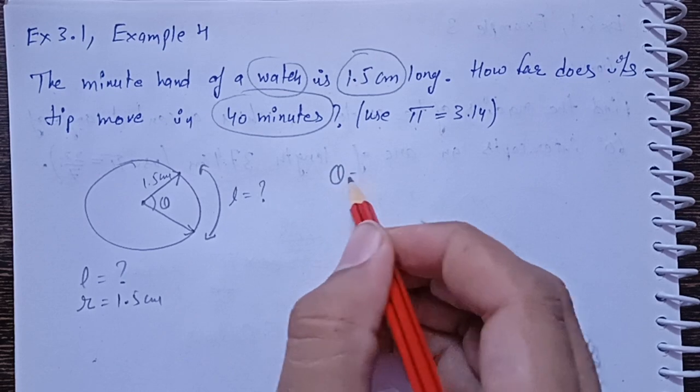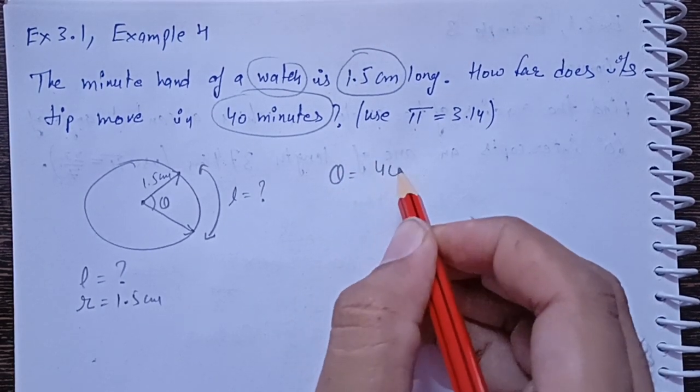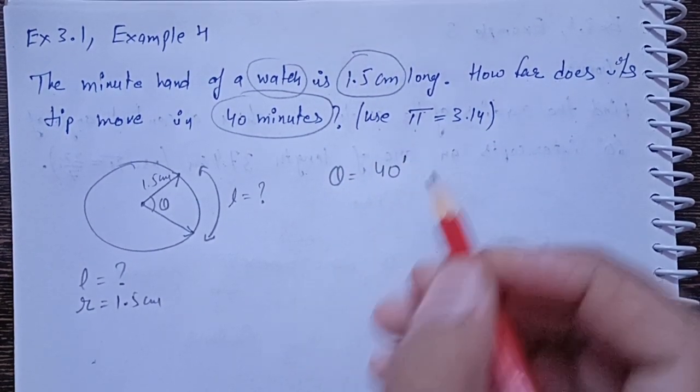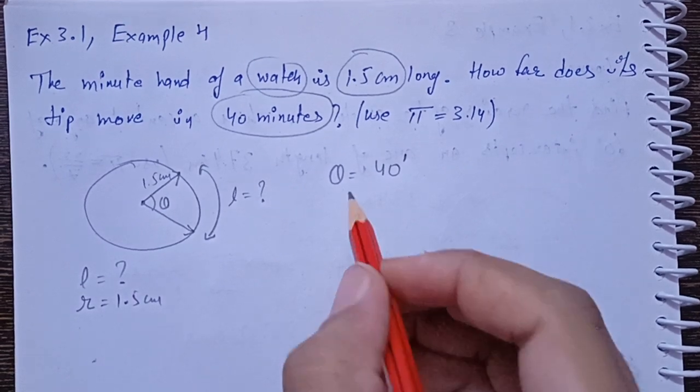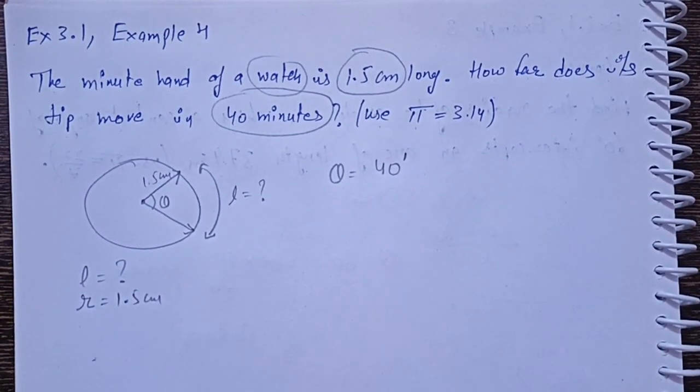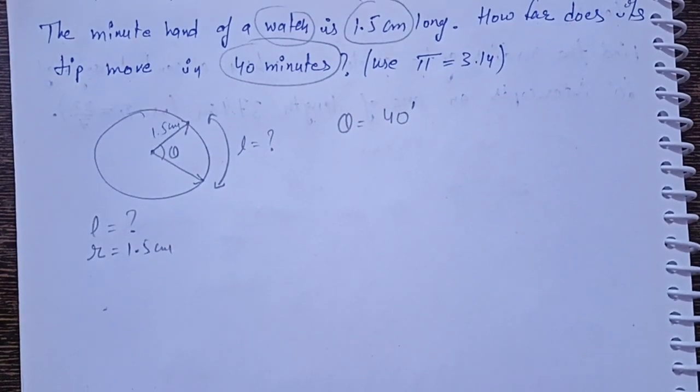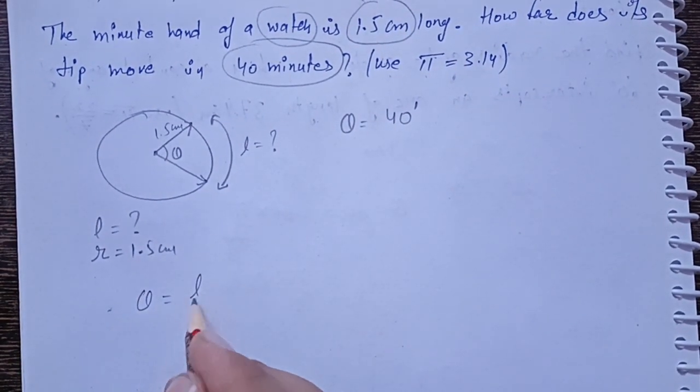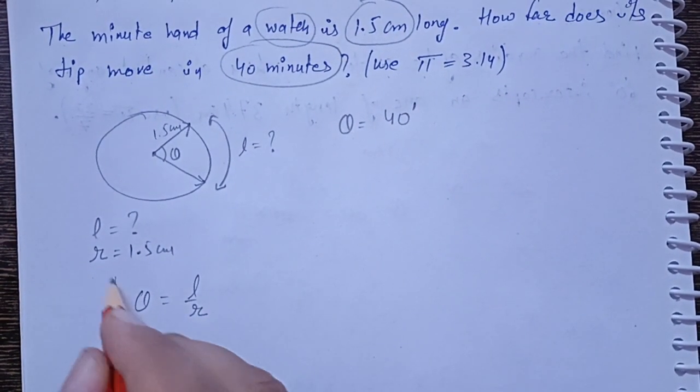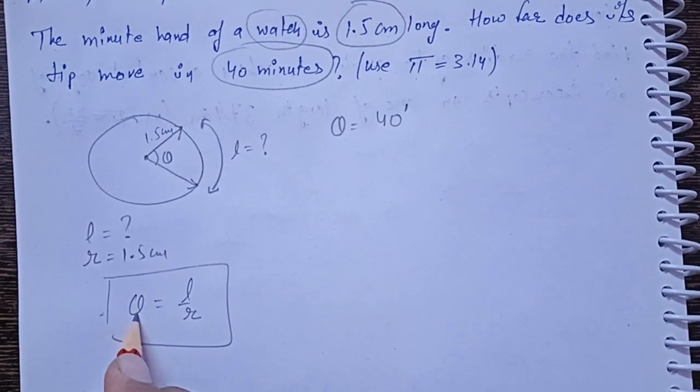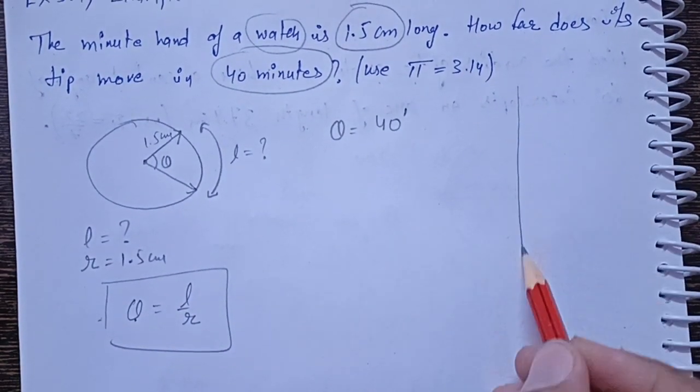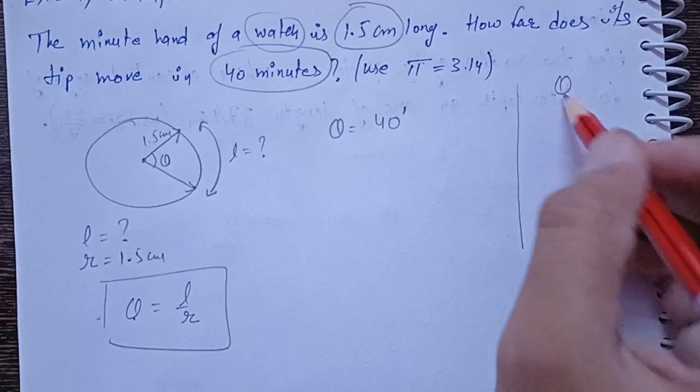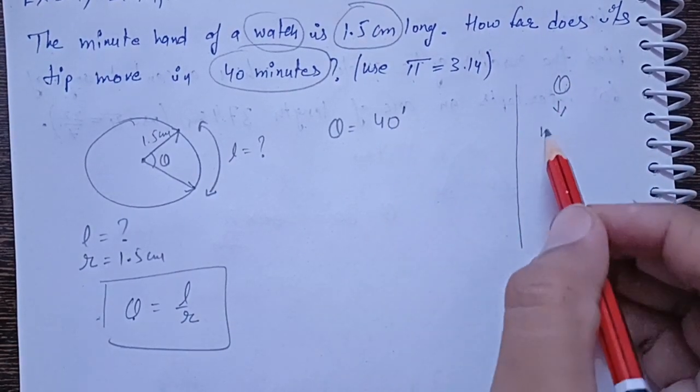Theta is 40 minutes. We have applied the formula theta is equal to L by R. In this formula, theta is in radians. So, first we have to convert theta given in minutes.